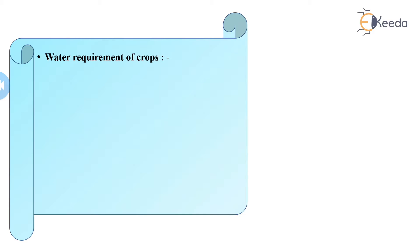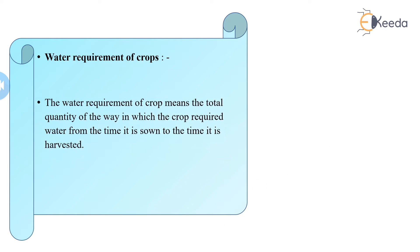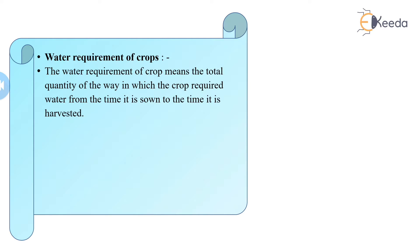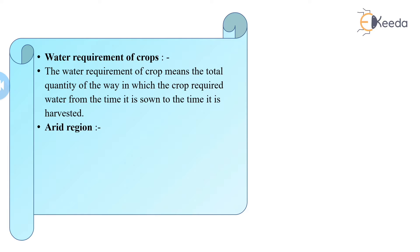Let's start with the introduction of water requirement of crop. Water requirement of crop means the total quantity of water which the crop requires from the time it is sown to the time it is harvested. The actual volume of water required by the crop from its sowing up to its harvesting is termed as the water requirement of a crop.